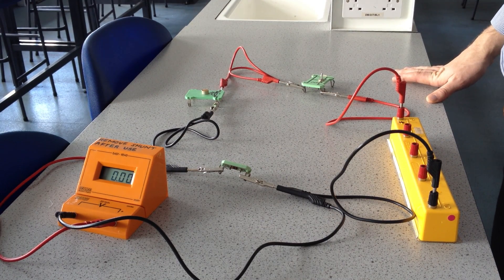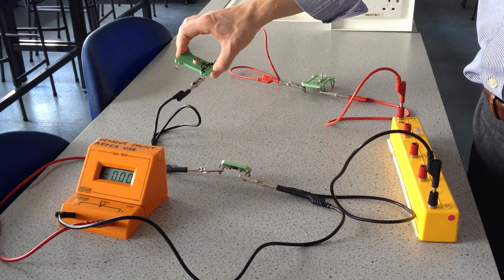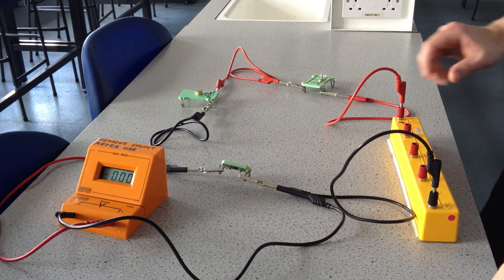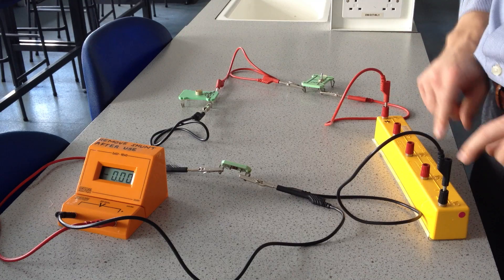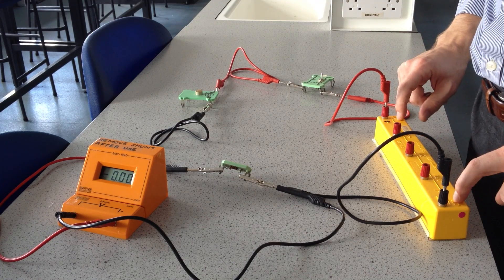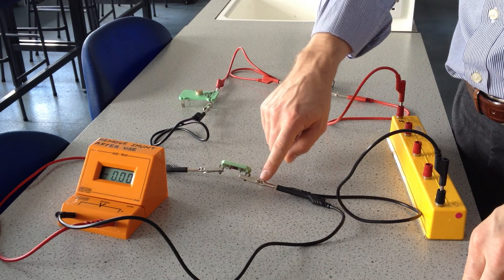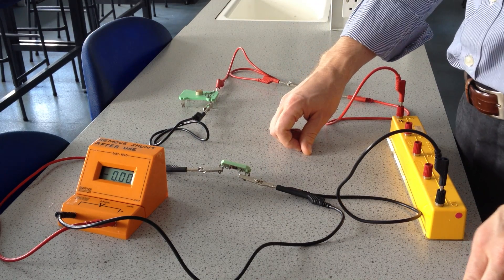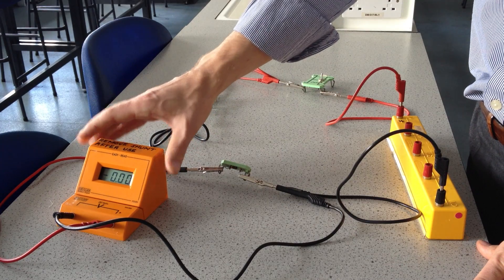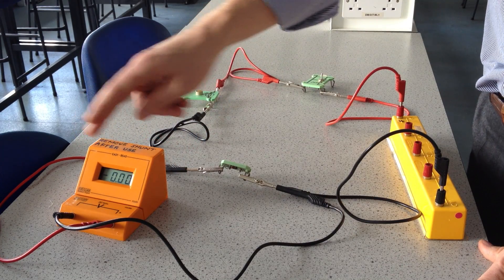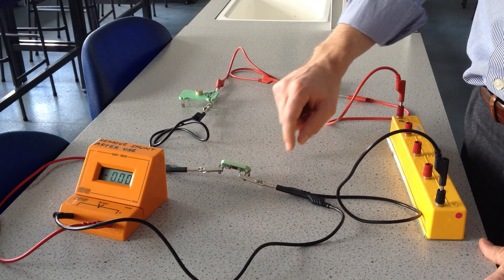This is a potential divider experiment with a light dependent resistor. The setup in this circuit is we have our power supply here, the cells. That's in series with our light dependent resistor, also in series with a fixed resistor. This voltmeter is reading our voltage output. That's connected in parallel with the fixed resistor.